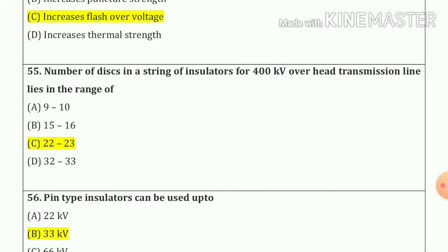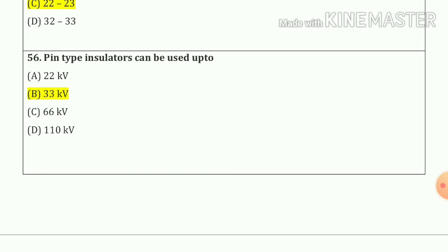Question number 55: number of discs in a string of insulators for 400 kV overhead transmission lines lies in the range of 22 to 23 — option number C. Question number 56: pin type insulator can be used up to 33 kV — option number B.